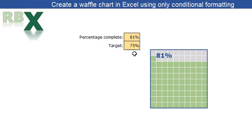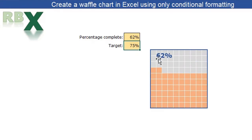You can see there is a target and a percentage complete. When the percentage complete is higher than our target, our squares are green. When I change it to for example 62 percent, you see my squares are red. There's a label in the chart which indicates the percentage complete and I'm going to show you how to create this beautiful waffle chart.